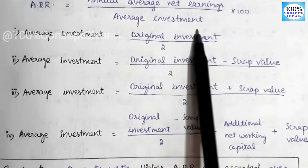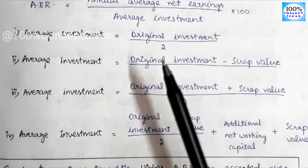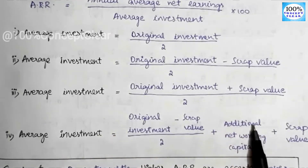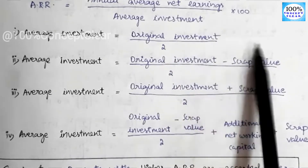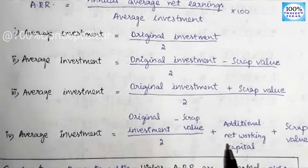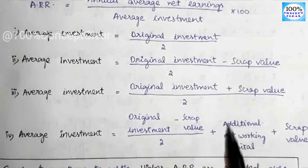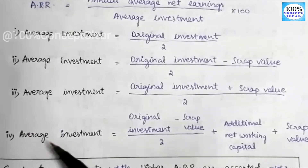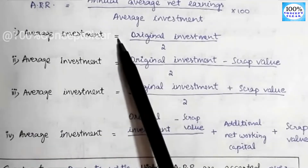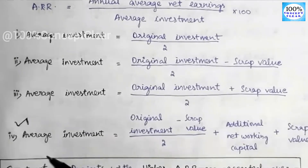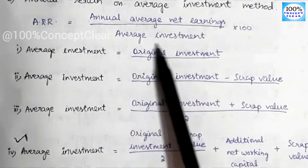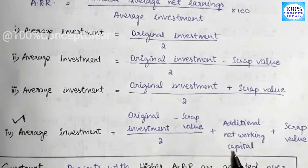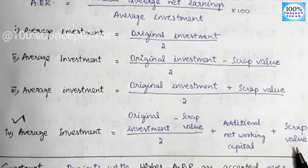When using the average investment method with four formulas, the answer will differ based on which formula you apply. We will primarily use the fourth formula for average investment, because the fourth formula is the most commonly used and gives the most complete and correct answer.